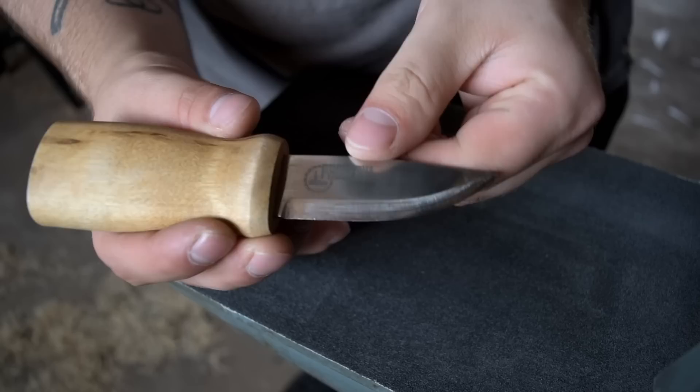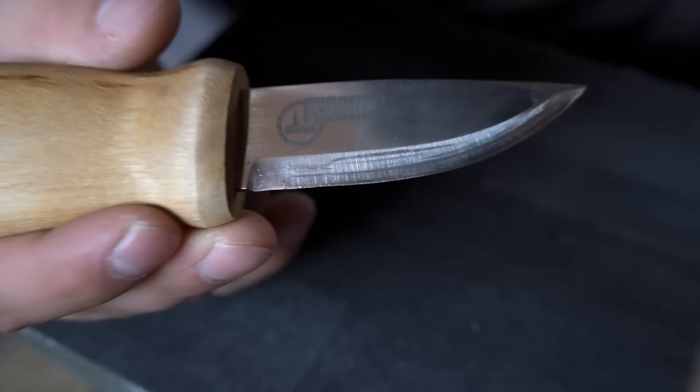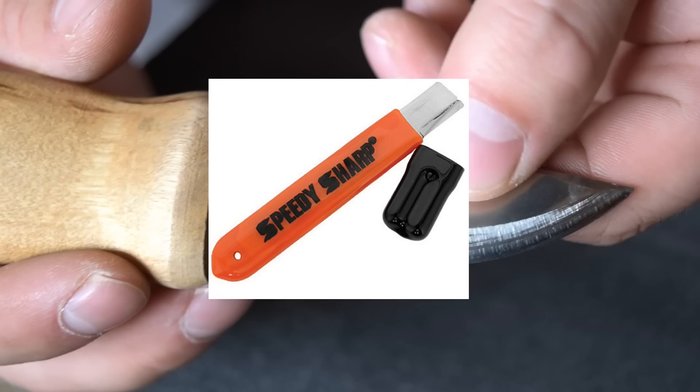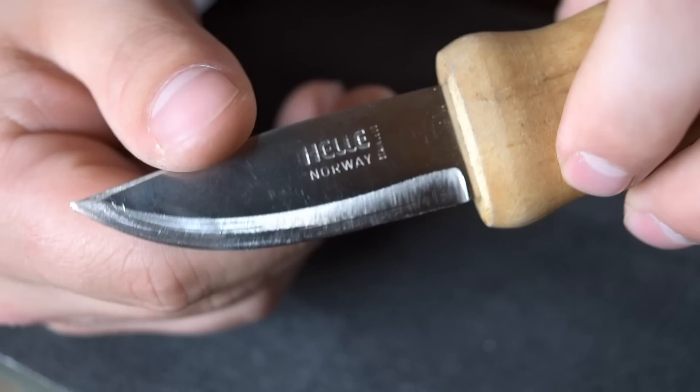As for the damage, can you see those striations going lengthwise down the blade? That was most likely done by one of these tools you see on the screen, one of those carbide scraper tools.